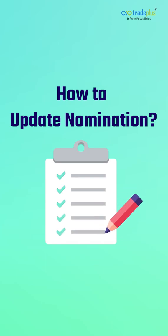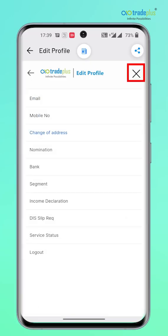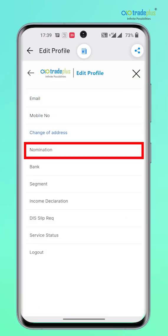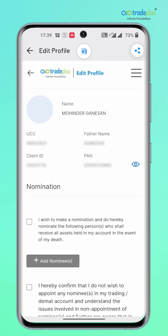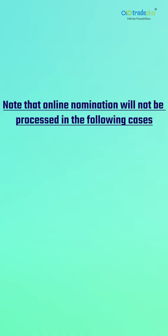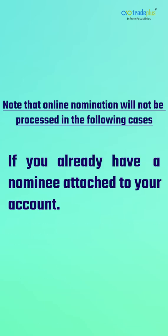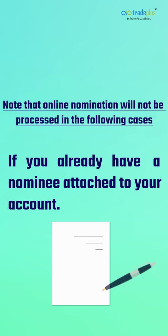How to update nomination? Select Nomination from the list of profile edit options to update your nomination request and follow the on-screen instructions. Note that online nomination will not be processed in the following cases: if you already have a nominee attached to your account, in such cases to modify or to add more nominees, you need to provide physical forms duly signed.